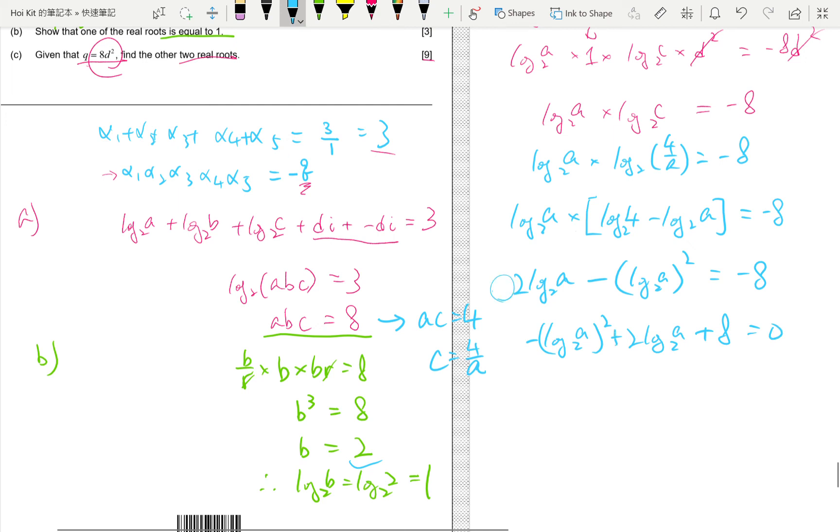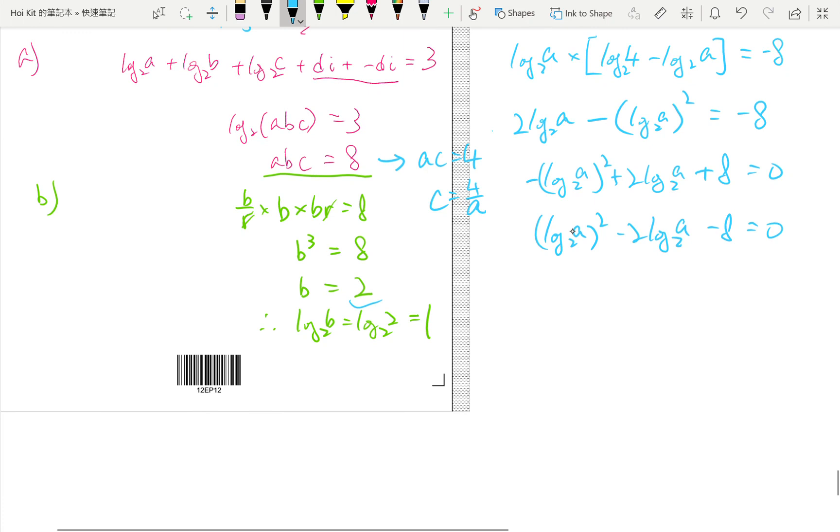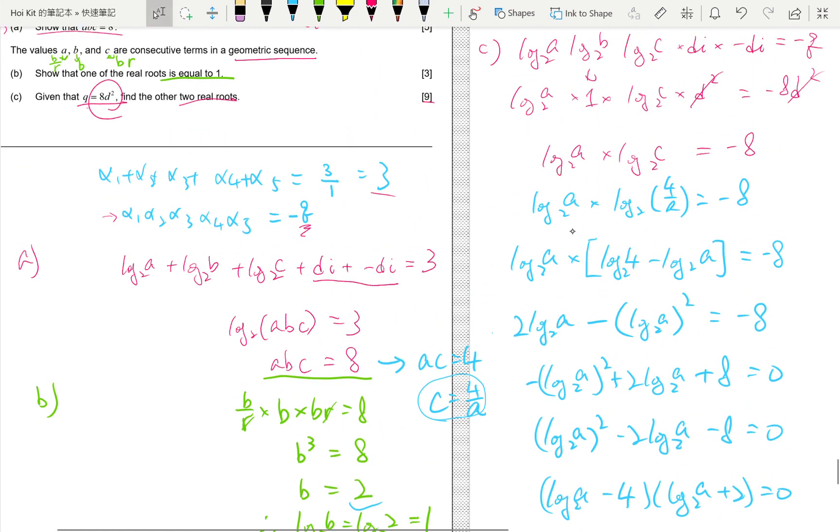So, we'll divide the negative on both sides to make things nicer. And we will factorize it. So, log a base 2 is 4 or minus 2. Which means a is either 16 or 1 over 4. Yeah. So, we know a. Should we find c? You could go to find c. But, if you look at the equation here.